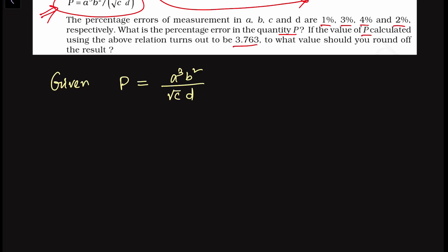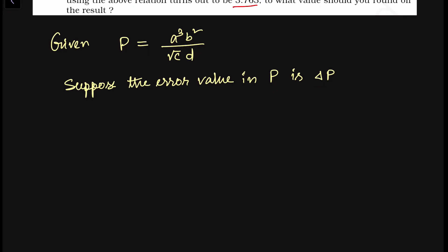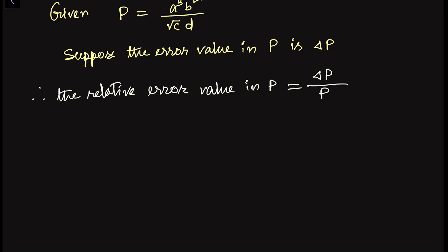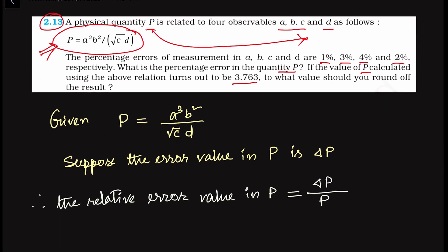Now suppose the error in P is delta P. The error can be either positive or negative. If we want to find out the relative error, we have this much error in the quantity measurement. To express the error relative to P, the relative error is delta P divided by P.